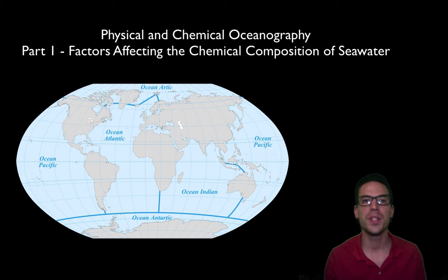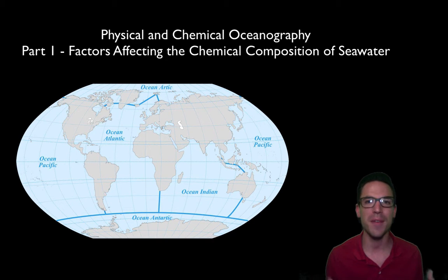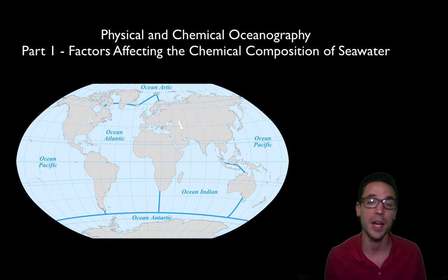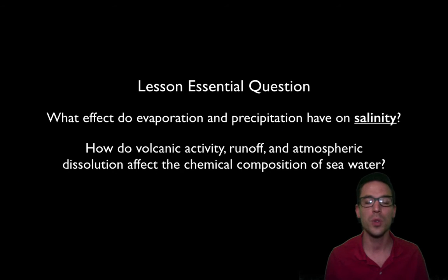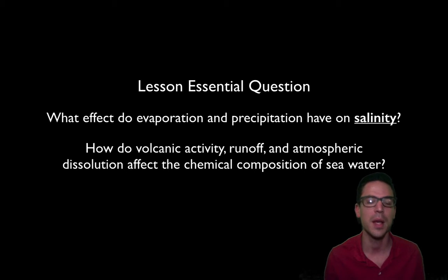Hi guys and welcome to our first video in unit 7 on physical and chemical oceanography. In this video we're going to be taking a look at factors affecting the chemical composition of seawater. We have two essential questions: what effect do evaporation and precipitation have on salinity, and how do volcanic activity, runoff, and atmospheric dissolution affect the chemical composition of seawater.